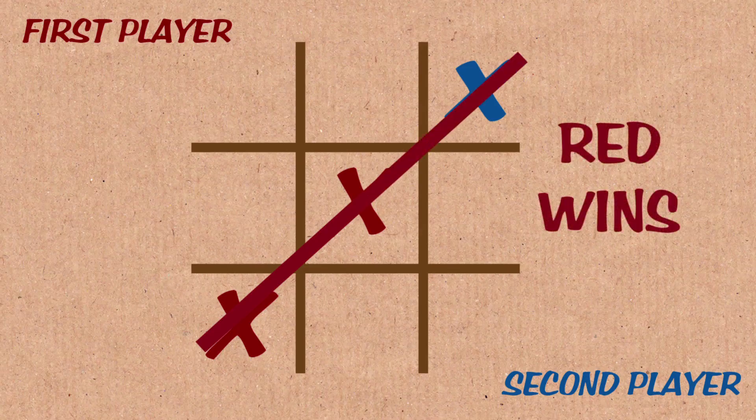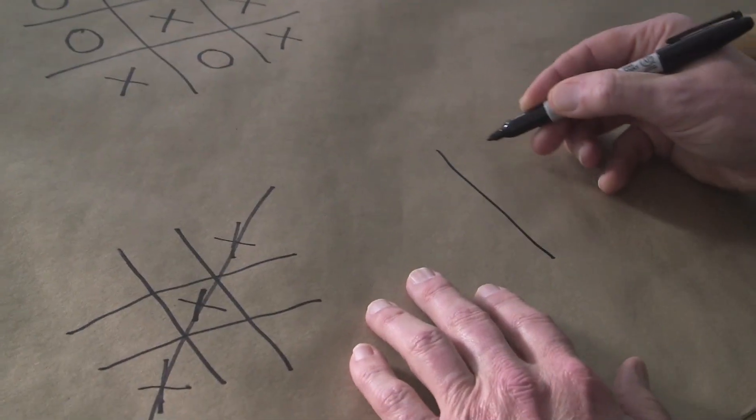Because the first person is always going to take the center. There are other possible moves. You can win by just simply taking the center. Let's say you did make a different move. Okay, so let's at least look at that.